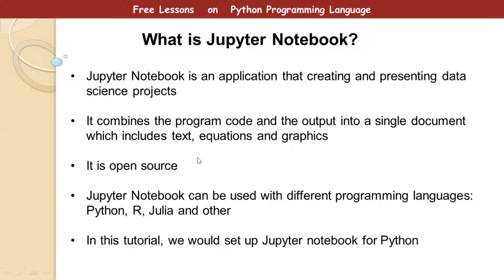So what is Jupyter Notebook? This is very interesting. Jupyter Notebook is an application that is used for creating and presenting data science projects. This simply means you write a program and package the code together with its output, and you are ready to share or distribute it. It can be presented on a web page, so portability becomes really good — it can run in any operating system just on a web page or in an internet browser.